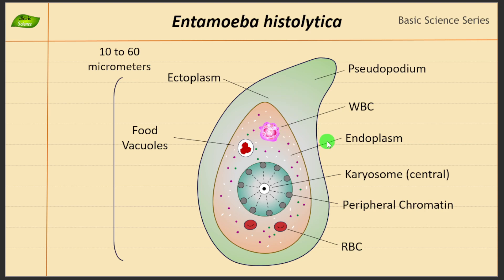It contains two forms. One is the active form, which is the motile trophozoite — that is what you are seeing here. I'll explain how it is motile and what organs are associated with the motility. The other is the dormant form; I have designed the illustration so I will directly show you that stage, which is called the non-motile cyst stage.